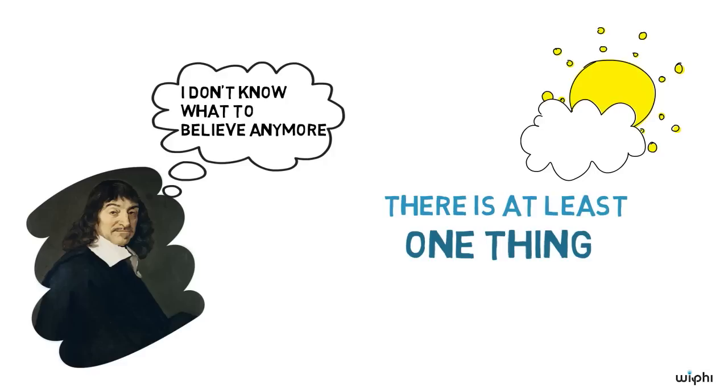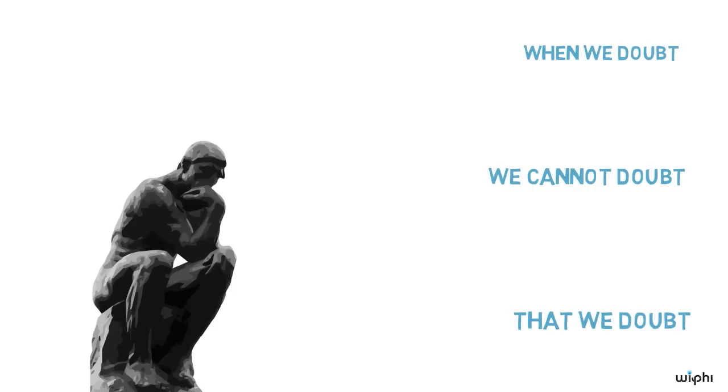But there is hope. Descartes argues that there is at least one thing that we cannot doubt and which we can be absolutely certain about. This is the fact that when we doubt, we cannot doubt that we doubt or think. For doubting is just a form of thinking.